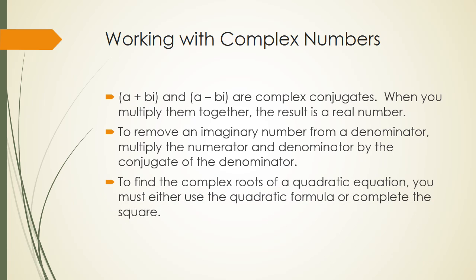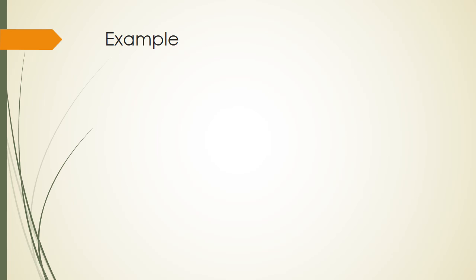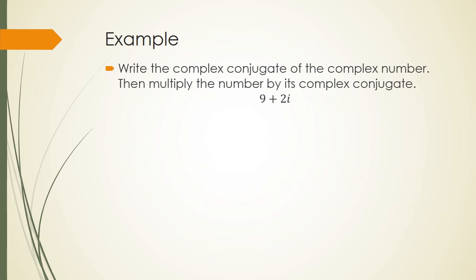To find the complex roots of a quadratic equation, you must use the quadratic formula or you must complete the square. All right, try this example. You're going to write the complex conjugate and then multiply the number by it. Okay, so the conjugate would be 9 minus 2i and when we multiply, we get 85.